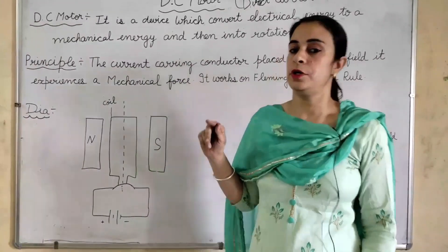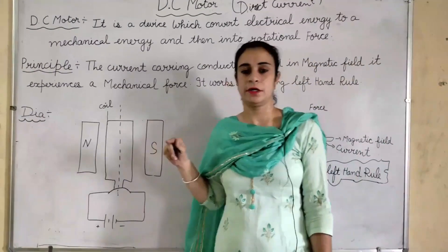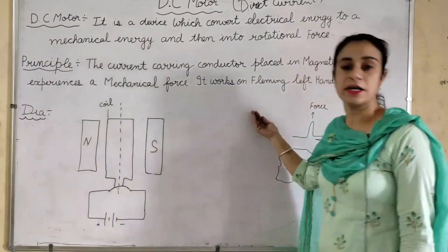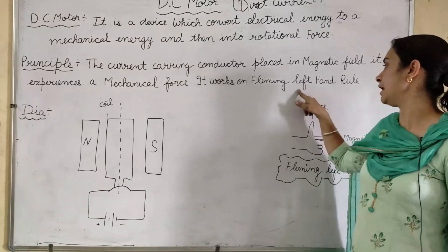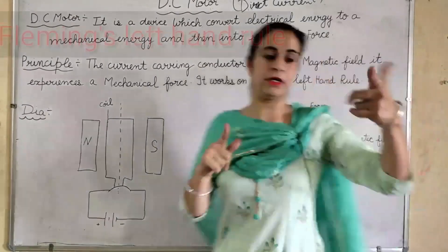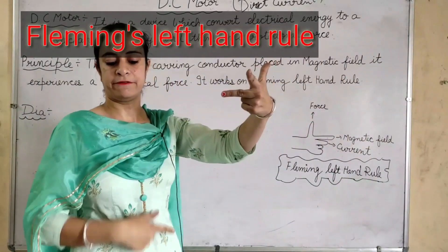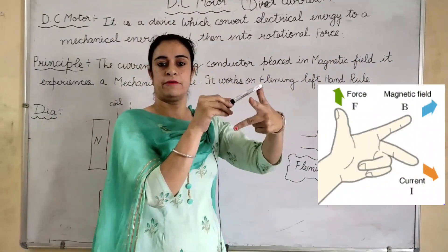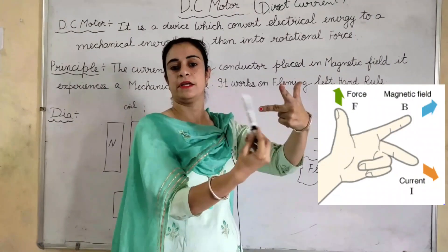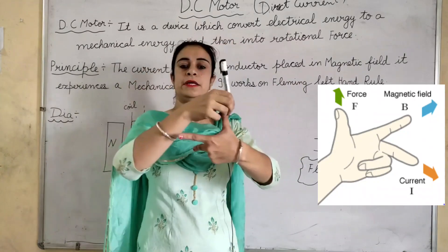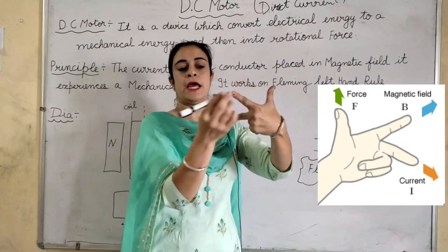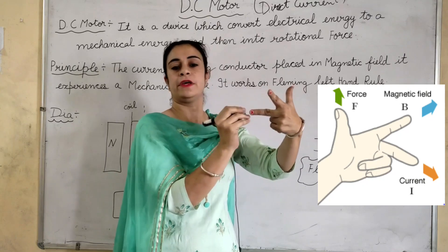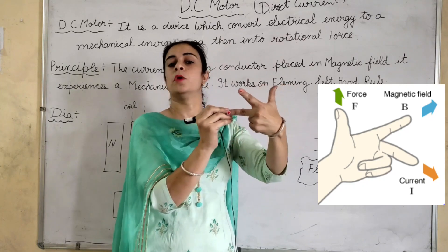When the force is produced, the motor starts to move. This is Fleming's Left-Hand Rule. In this rule, we use three fingers: the thumb finger, the index finger, and the middle finger. The thumb finger indicates the direction of the force. The index finger indicates the direction of the magnetic field. The middle finger indicates the direction of the current.